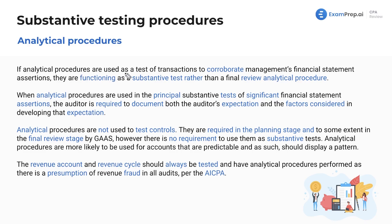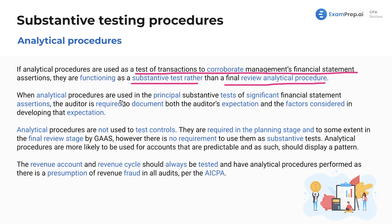If analytical procedures are used as a test of transactions to corroborate management's financial statement assertions during the testing phase, they are functioning as a substantive test rather than a final analytical procedure. When analytical procedures are used as the principal substantive tests of significant financial statement assertions, the auditor is required to document both the expectation and the factors considered in developing that expectation. For example, if you expect revenue to be at $10 million but see $12 million, document that you expected $10 million and why — because revenue has consistently gone up by five percent every year.